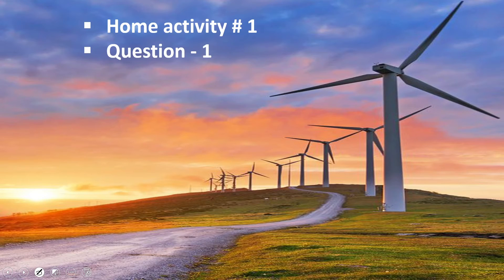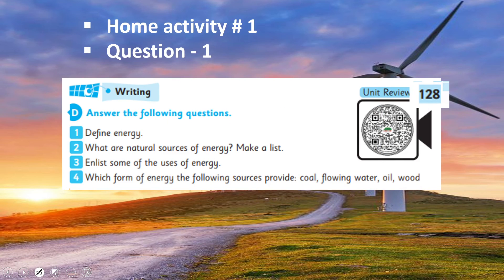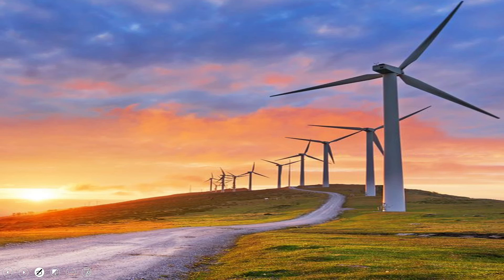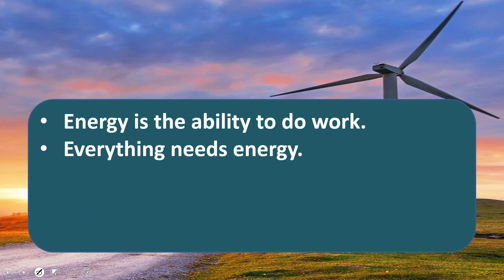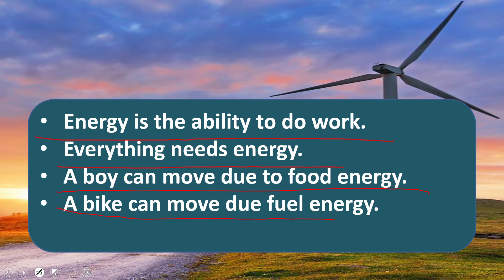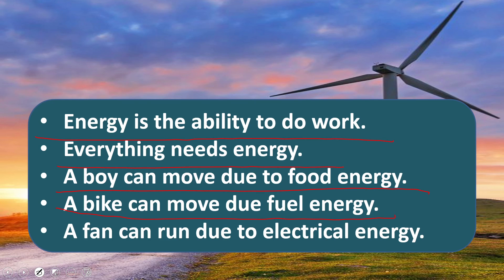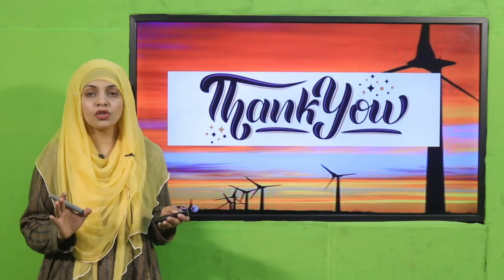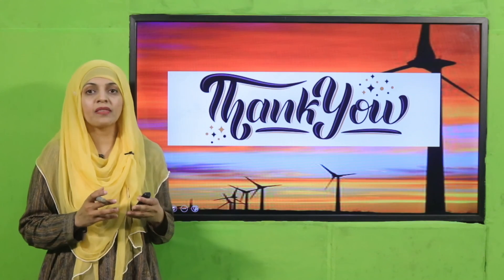My dear students, now quickly note down your homework. For homework, you will do home activity number one, and you will also do question number one on page number 128 — define energy — in your notebook. Now it is time for wrap-up. Energy is the ability to do work. A boy can move due to food energy, a bike can move due to fuel energy, and a fan can run due to electrical energy. Everything — living and non-living — needs energy to do different works. I hope you have understood about energy. Keep everybody around you safe, have a good day, thank you so much.